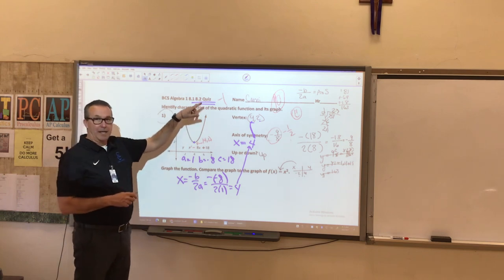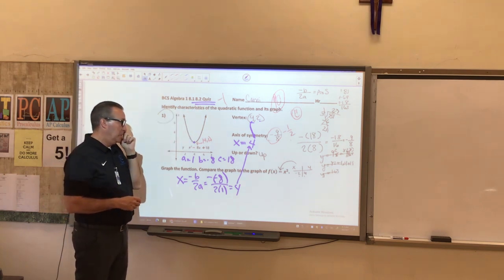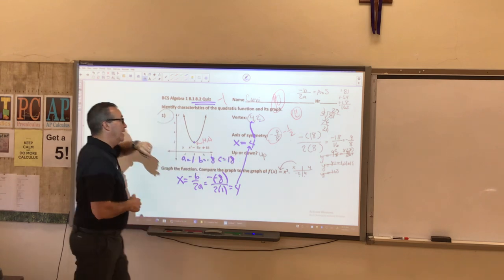So, still, your axis of symmetry should be x equals the formula. And this opens up like a cup, not down like a frown. So, up, you get it correct, of course.